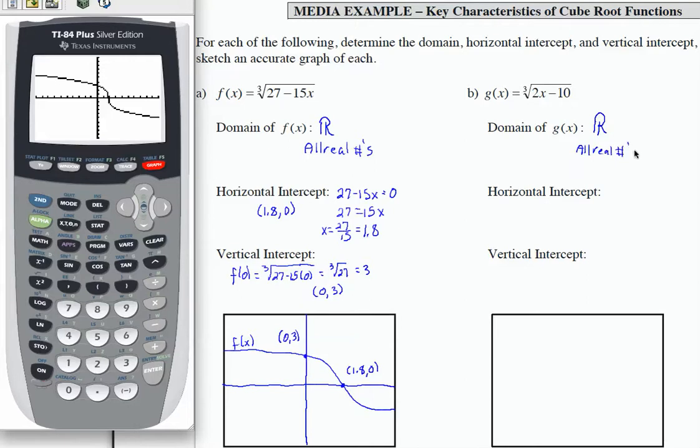To find the horizontal intercept, we're going to take what's under the radical, 2x minus 10, set it equal to 0. I'm going to add 10 to both sides, so 2x equals 10. Then I'm going to divide both sides by 2, giving me x equals 5. So this will be the ordered pair (5, 0).